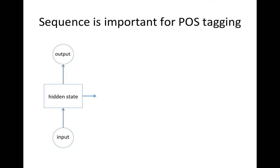Remembering previous words is the key of the Recurrent Neural Network, also known as RNN, concept. This simple diagram was made for remembering previous words — in general, previous states — and inferring the current state based on the current input and the previous state.